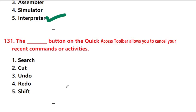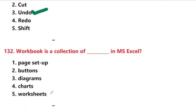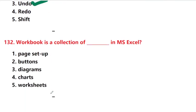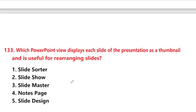The Undo button on the quick access toolbar allows you to cancel your recent comments or activities. Answer is option 3. A workbook is a collection of worksheets in MS Excel — option 5: worksheets.